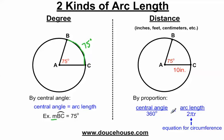Let me explain this proportion. This proportion is comparing the central angle over 360 degrees, setting it equal to the arc length over 2πr. Now, 2πr is actually the circumference. So this is the part of the distance around a circle over the whole distance around the circle, compared to part of the angle measure over the entire angle measure — part over whole equals part over whole. We know a circle is 360 degrees, we can find the circumference if we have the radius, and then if we know the central angle, we cross multiply, find arc length, and it's pretty easy.